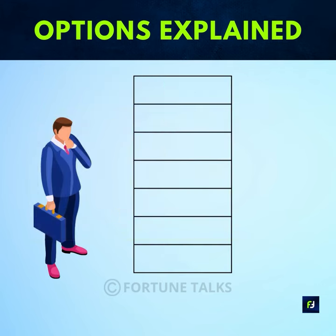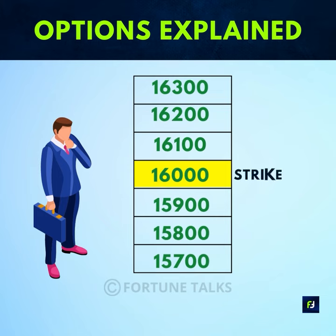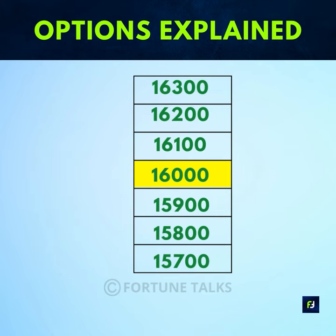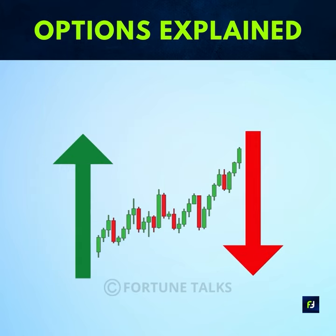The price at which a trader agrees to buy the underlying security via the option is called the strike price. When determining strike prices, you are betting that the underlying will go up or down in price based on this criteria.